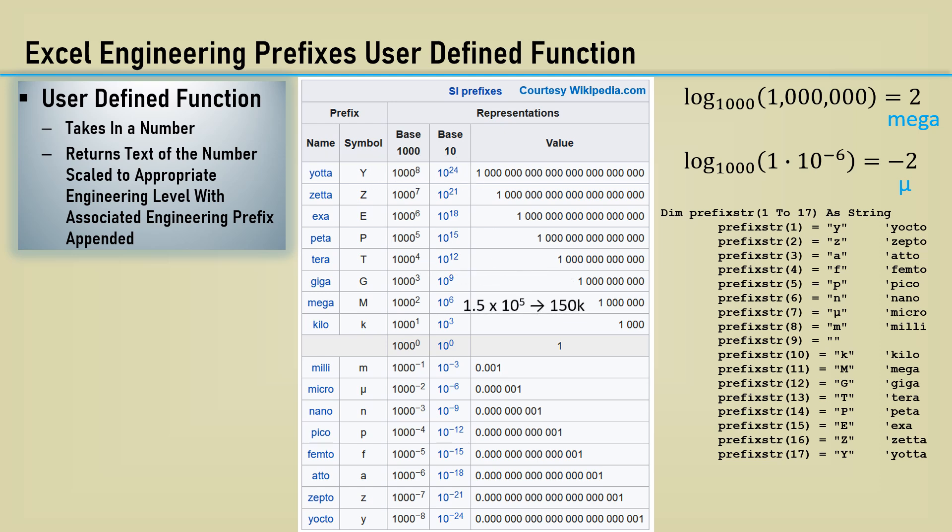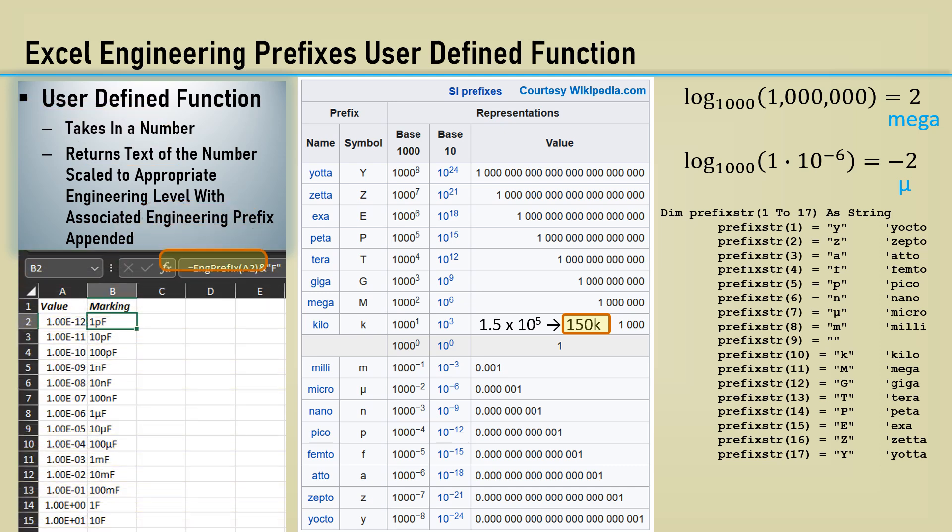An input of 1.5 times 10 to the fifth would return 150k. Here's an example of capacitor values using the engineering prefix function with a capital F concatenated with it.